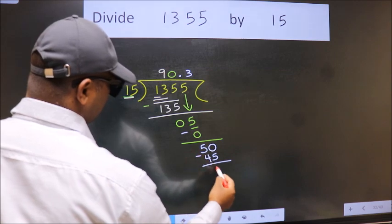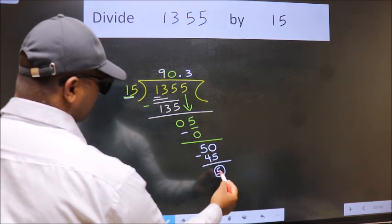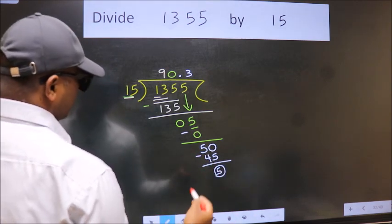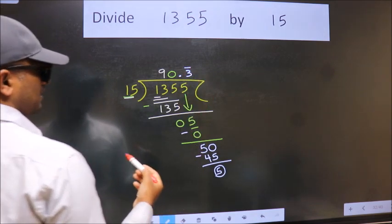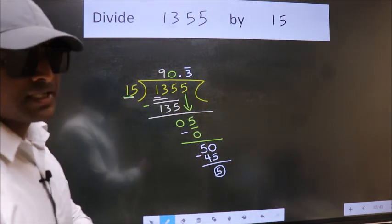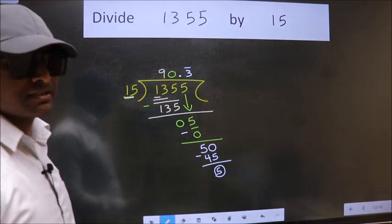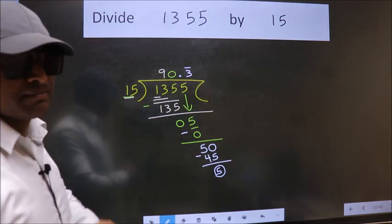Now we subtract. We got 5 again. That means we get bar on this number. Did you understand where the mistake happens? You should not do that mistake.